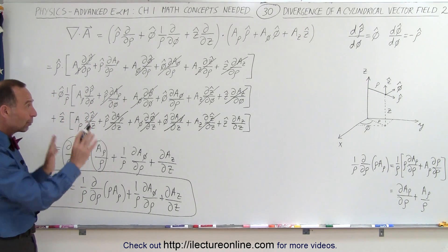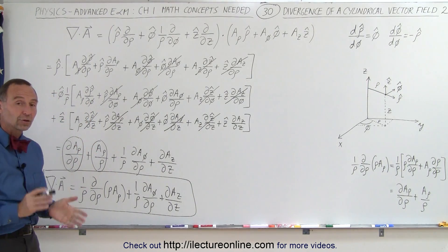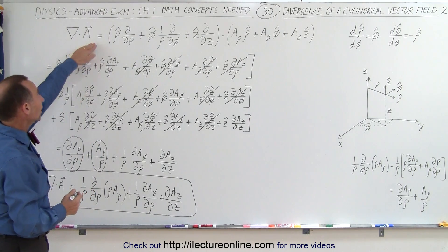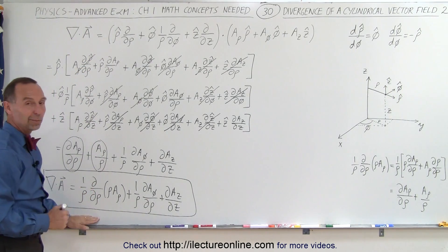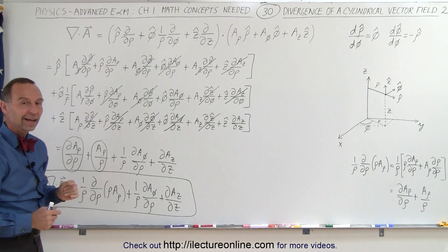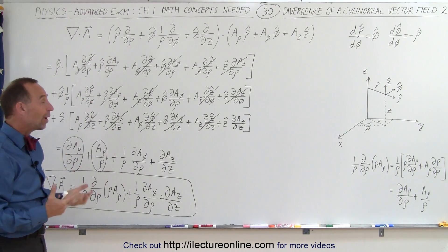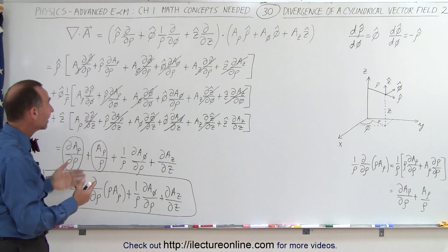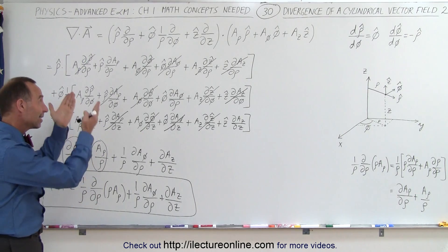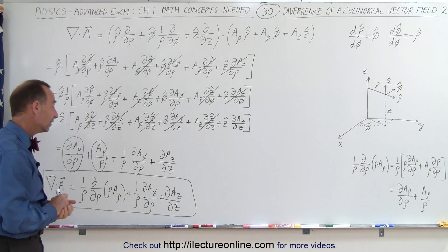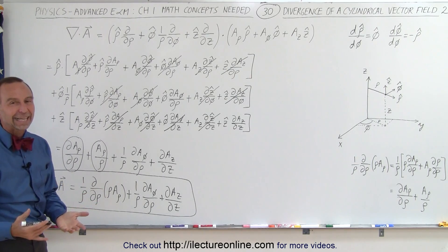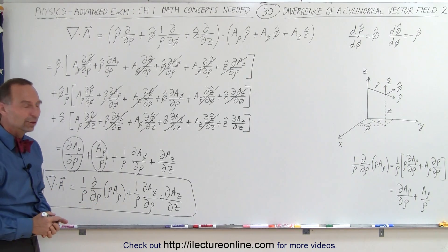The divergence of the vector in cylindrical coordinates can now be written in its final form. The reason I went through all that work is because most textbooks will show you the final result but will not show you how they actually got there — and it takes quite a while to figure out how they arrive at it. So in case you're interested, here's how it's done. This is the final result of the divergence of a vector in cylindrical coordinates.